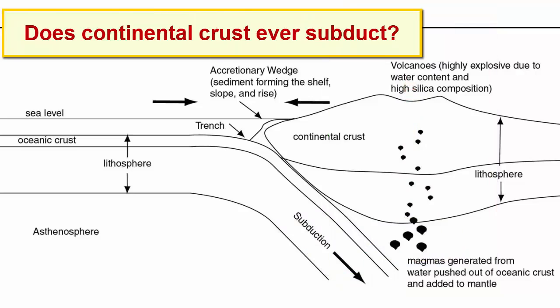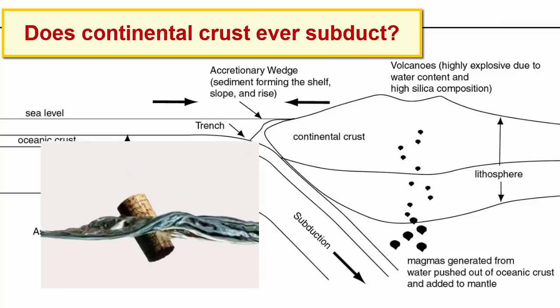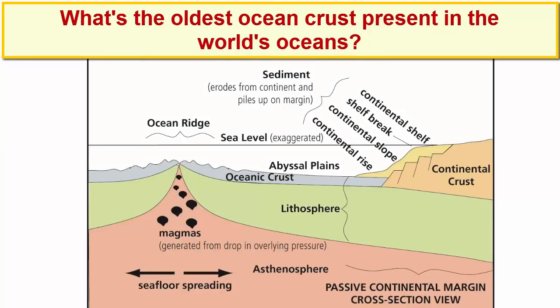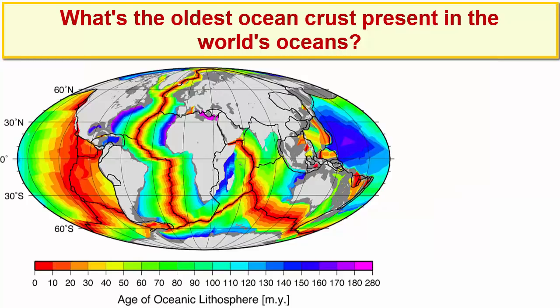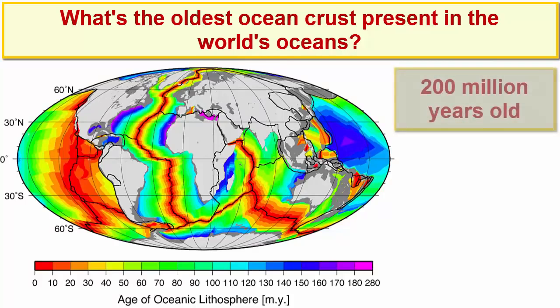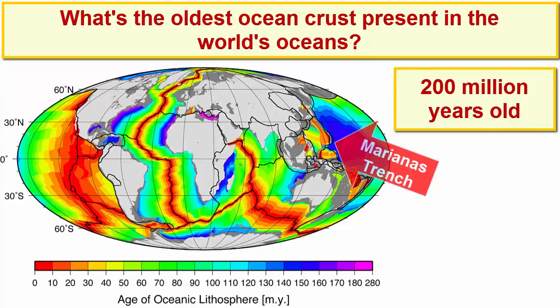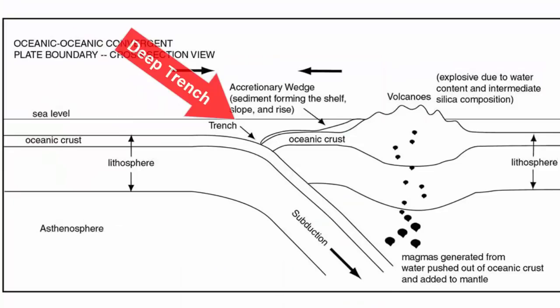Continental crust never subducts because it is the least dense material on the planet. The oldest ocean lithosphere we can find to determine when ocean lithosphere detaches and subducts on its own is 200 million year old rock, currently subducting under the Marianas Trench in the Pacific. The Marianas Trench is the deepest part of the planet because it is a converging plate boundary where two ocean plates are colliding—both plates ride low isostatically, and there are no nearby continents to fill the trench with sediment.